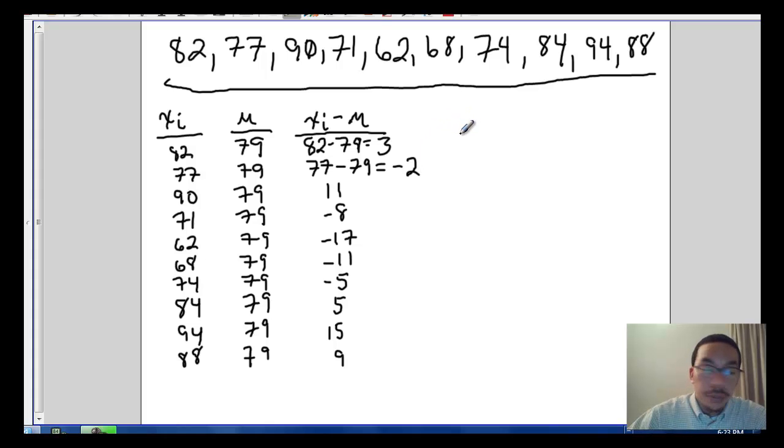Alright, let's make one more column. This will be x sub i minus mu and then squared. So this is the squared deviations about the mean. The last row was deviations about the mean. This time we're squaring deviations about the mean. So basically all we need to do is take our results from this row and square it. So 3 squared equals 9.